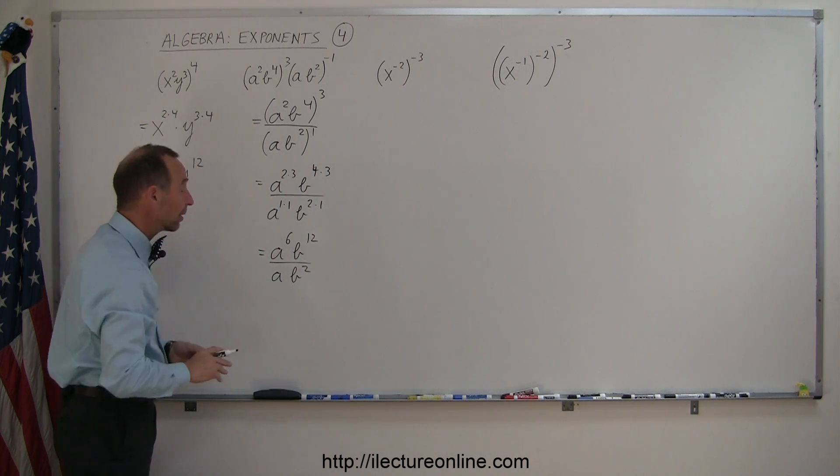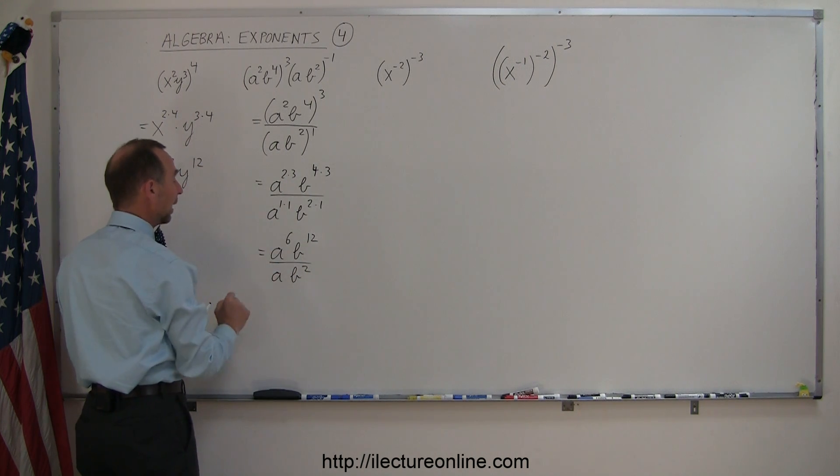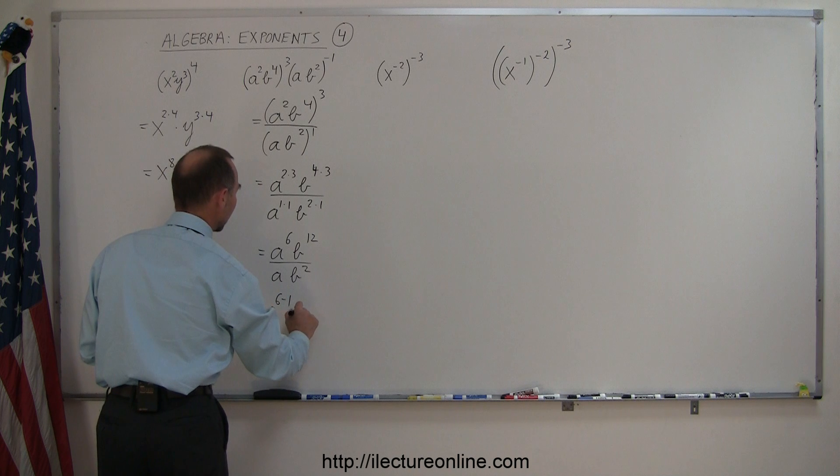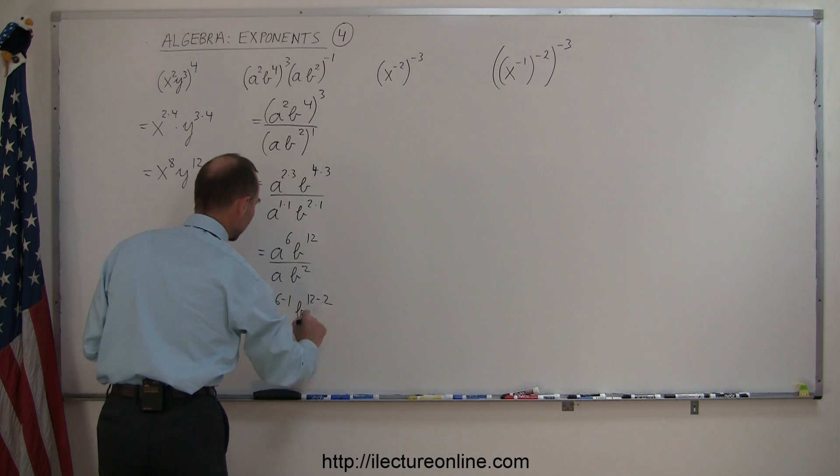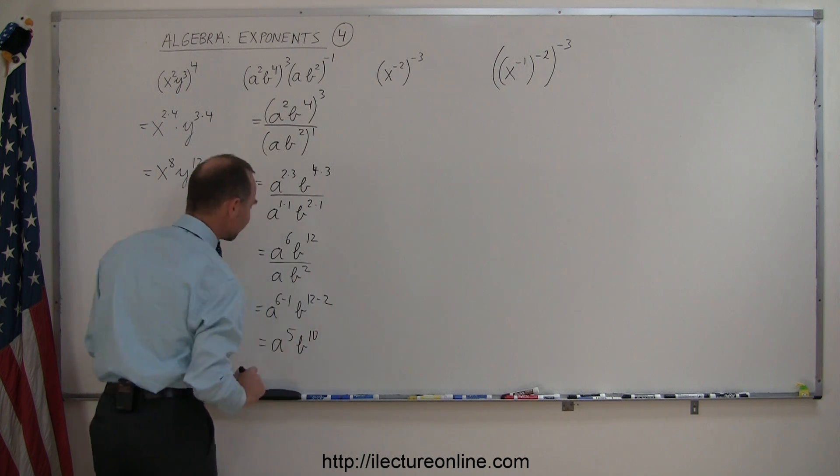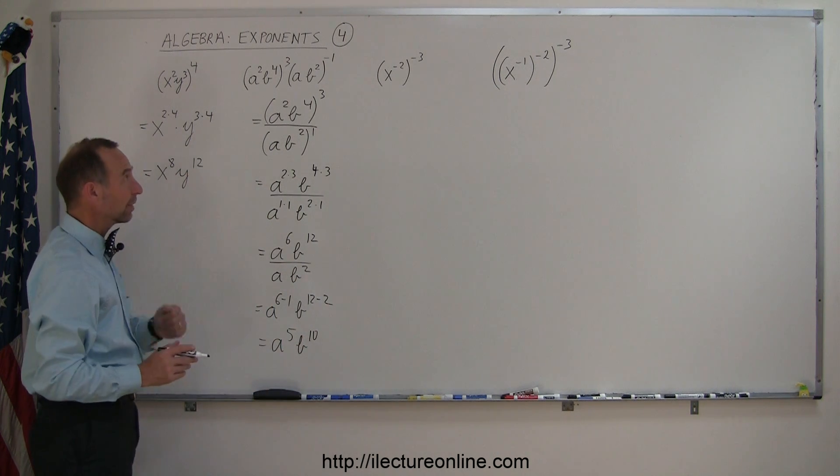Now we're not done yet because now we have an a in the numerator and denominator. The rule is, if the bases are the same, subtract exponents. So this becomes a to the 6th minus 1 and b to the 12th minus 2. So this becomes a to the 5th and b to the 10th. Okay, moving on to the next one.